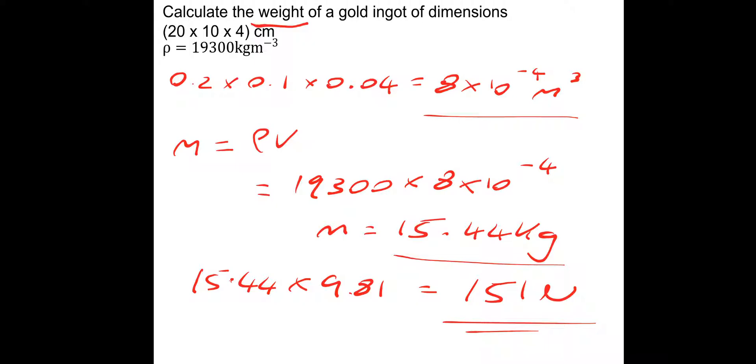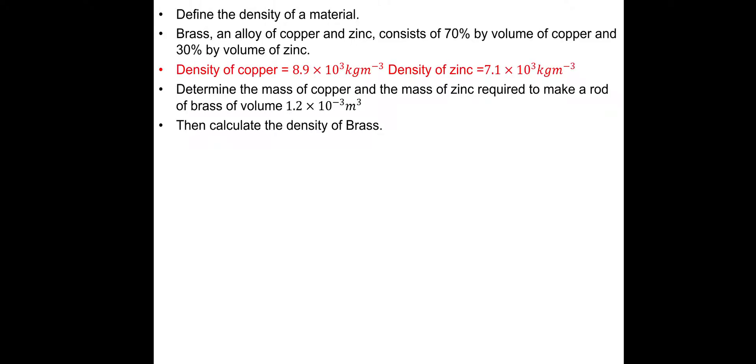Let's try the next one. First of all, define the density of material. And then there's a question after. The definition is simply mass per unit volume. Density is mass over volume. Mass per unit volume would be fine.